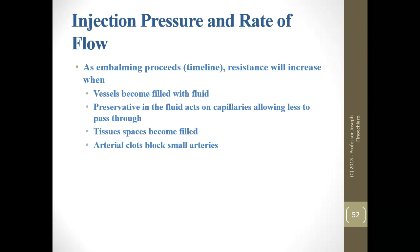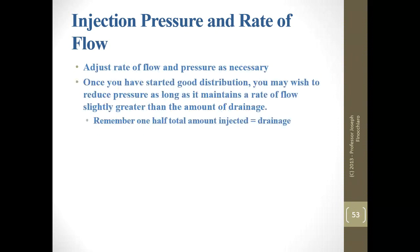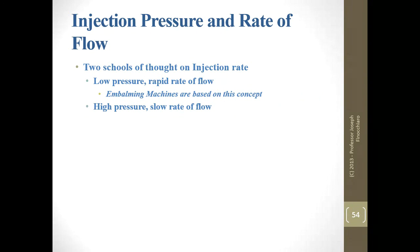As embalming proceeds, resistance will increase because we are filling empty areas, the preservative is making arteries and capillaries more rigid, we are filling tissue spaces that may have been dehydrated, and clots are blocking flow. Once you have established good distribution you can raise the pressure. The amount of drainage should be about half the total amount injected. Two schools of thought exist: low pressure with rapid rate of flow, or high pressure with slow rate of flow.